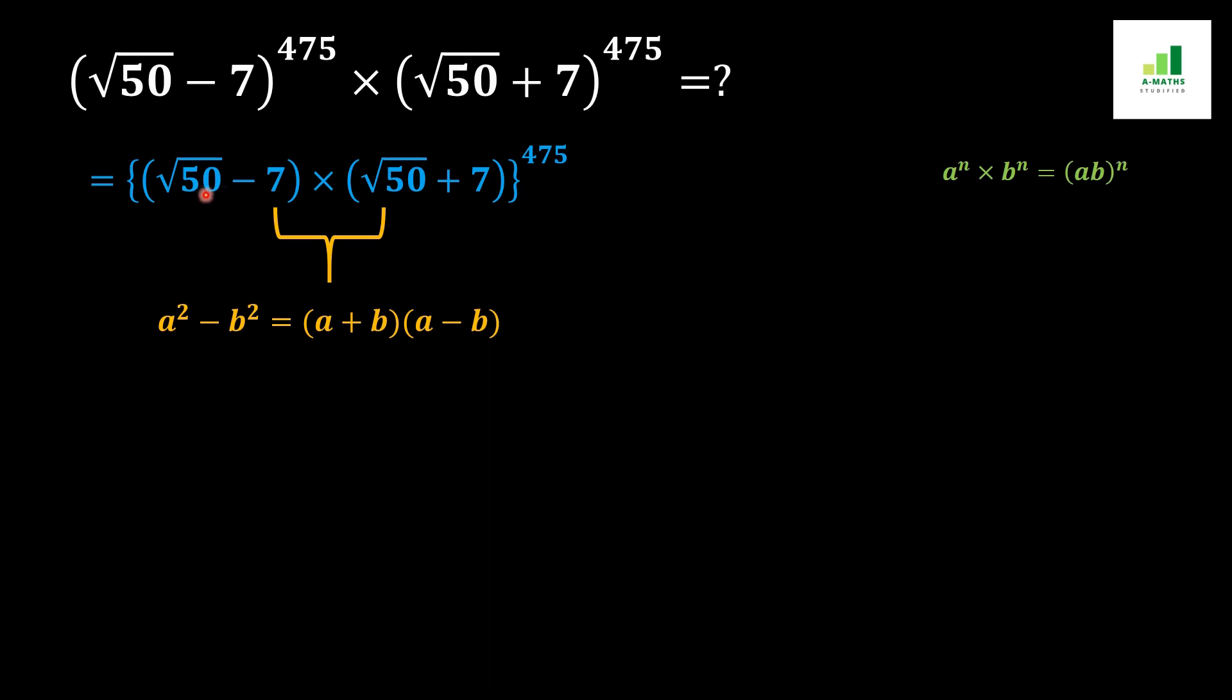We compact this value according to the formula and get {(√50)² - 7²}^475. Now in the next step, this square and root value will cancel out.